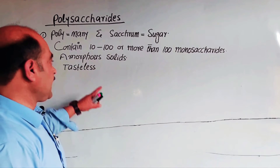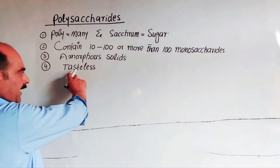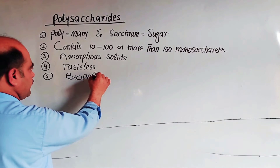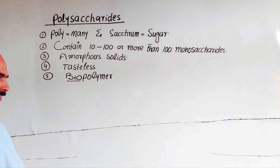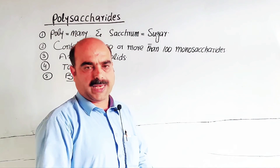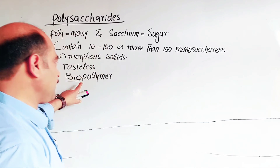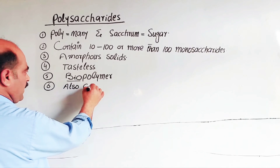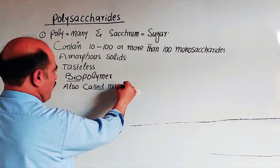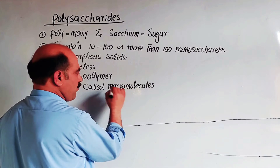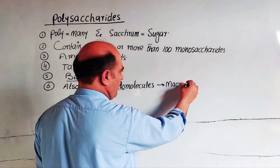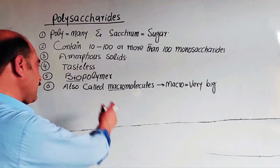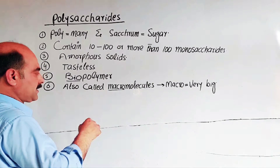Unlike monosaccharides and oligosaccharides which have a sweet taste, polysaccharides are tasteless. They are biopolymers — 'bio' means living thing — so these are high molecular mass organic compounds that naturally exist in living things. They are also called macromolecules. The word 'macro' means very large or very big.